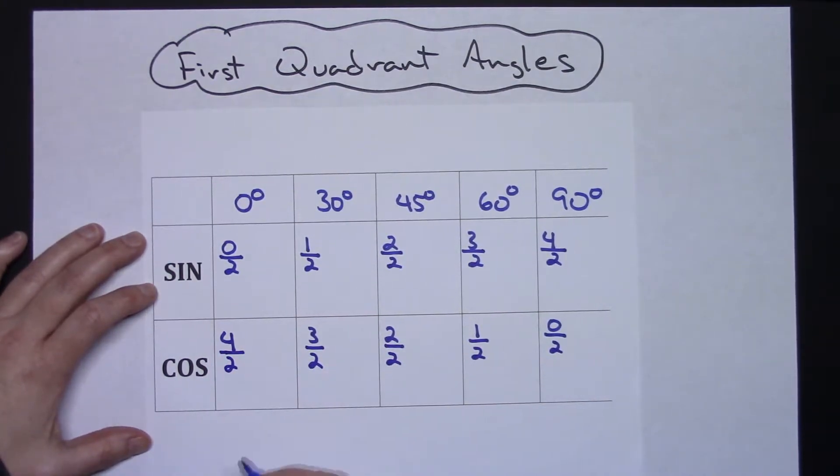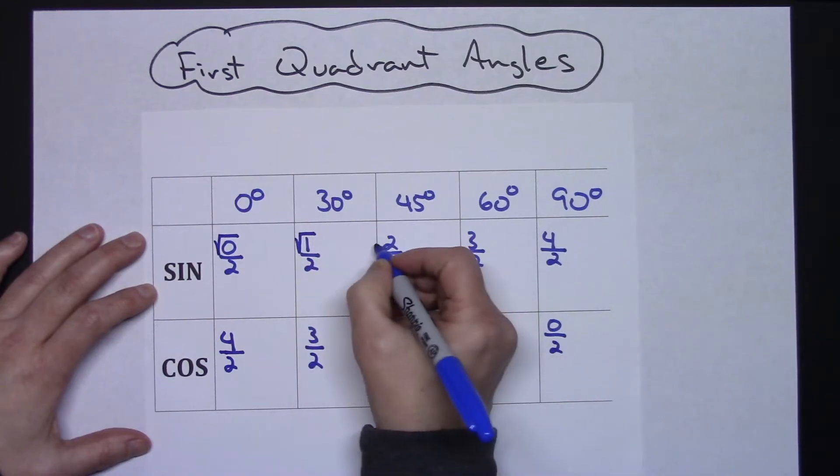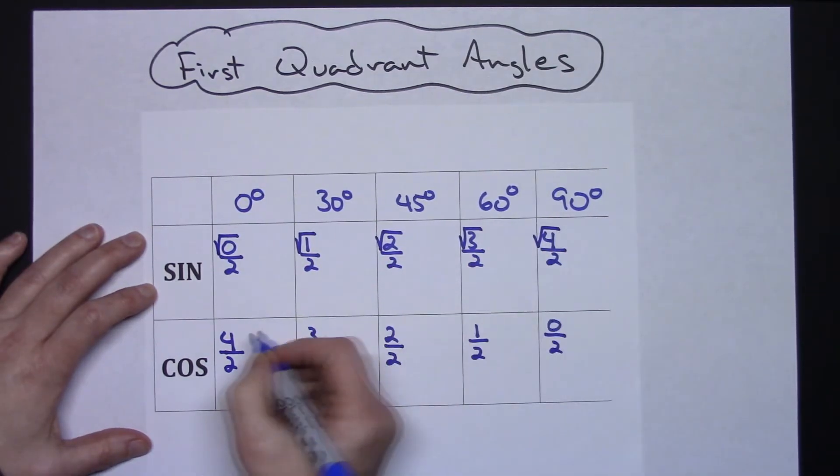Now next thing you're going to do is you're going to go through and you're going to put a square root on every one of your numerators. So square root on every one of the numerators.